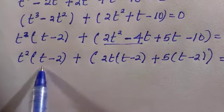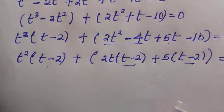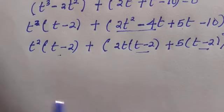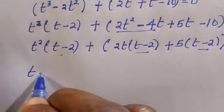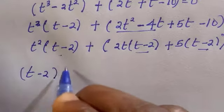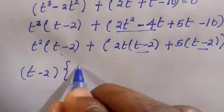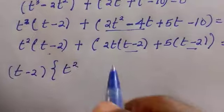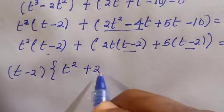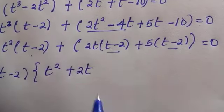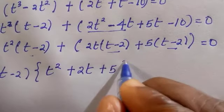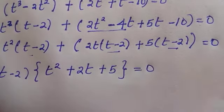Now we can check all these brackets, something is common to all of them which is t minus 2. We can take it out, by taking it out we'll create a bracket for it and another larger bracket. For the first one we are left with t square, the second one is plus 2t, while the third one is plus 5, everything equals 0.